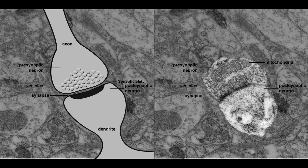Neurons transmit chemical signals across synapses, like the one shown in this electron micrograph. We can identify the dendrite of the receiving or postsynaptic cell, as well as presynaptic nerve terminals loaded with synaptic vesicles. Note the narrow cleft separating the pre- and postsynaptic cells.